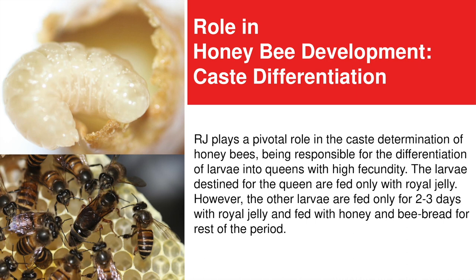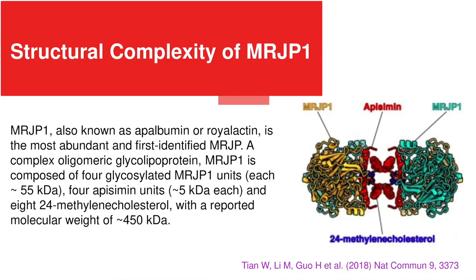The larvae destined to become queens are fed exclusively with royal jelly. However, other larvae are fed with royal jelly for only two to three days, and are then fed with honey and bee bread for the remainder of the period.